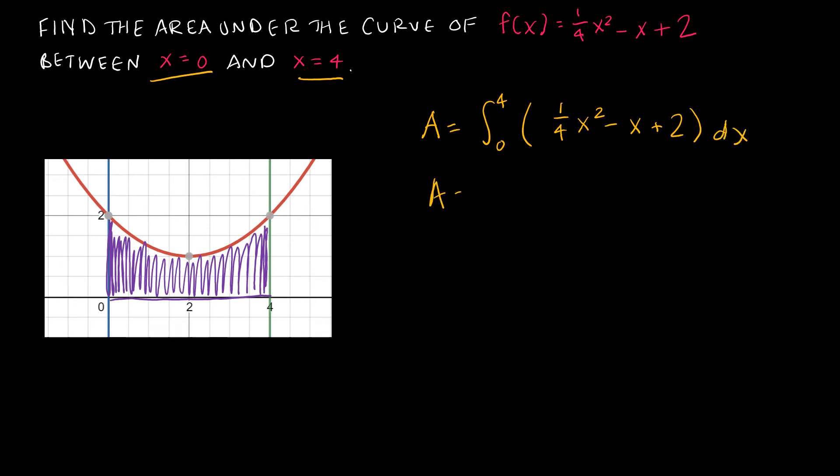To find that area then I'm just going to integrate. So again just using the power rule, I'm going to increase this by 1, so that's x³/3. That same value times ¼ actually gives me x³/12. I'm going to increase the 1 by 1, so that's x²/2. And then I'm going to increase x⁰ by 1, which is just x¹/1, so that's just 2x. Again from 0 to 4.